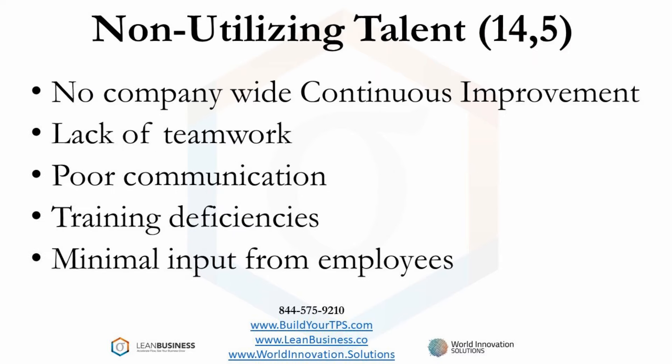This is a huge missed opportunity. Toyota's continuous improvement program generates about one idea every month by every person in the company — not a generic idea, but an idea directed towards a company-defined vision or challenge. Lack of teamwork and poor communication are signs of an opportunity squandered. If individuals are not operating at the high standard of your company, it's possible that lack of training is the reason. Every person in a company is an expert at what they do — if you just ask, they will tell you how to improve what they do.